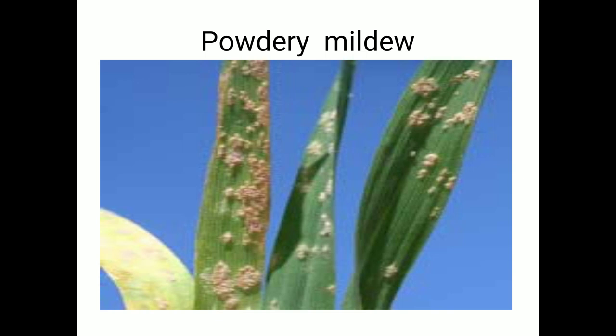The last disease is powdery mildew of wheat. Regarding symptoms, when the fungus attacks, whitish mycelial growth is observed on the upper parts of the plant. If the infestation is severe or humidity is high, the whole plant is completely covered with whitish mycelial or powdery growth. For control, dust sulfur powder at regular intervals.